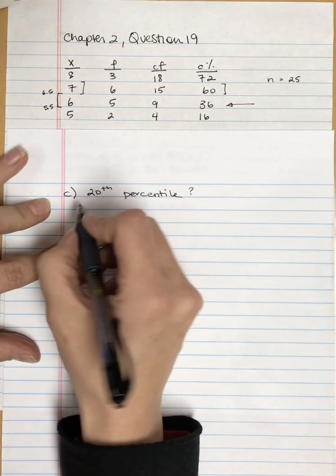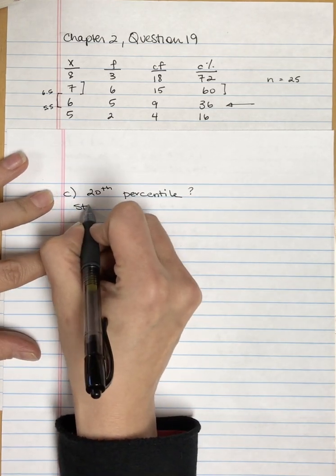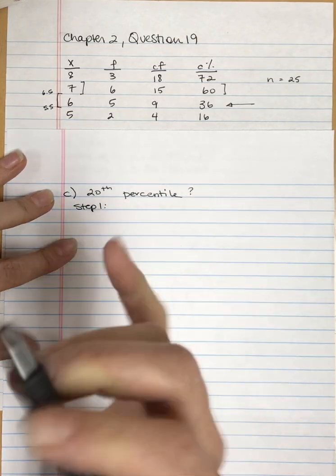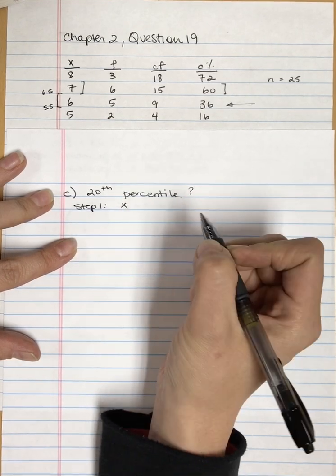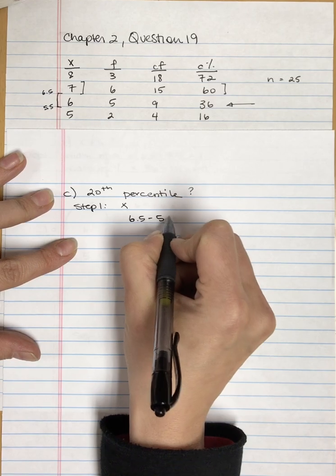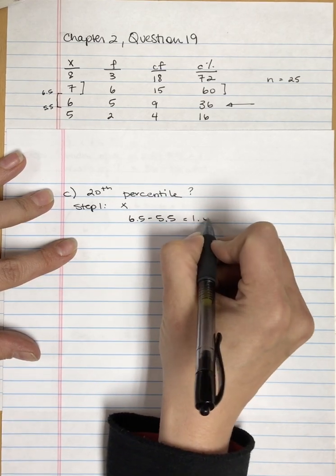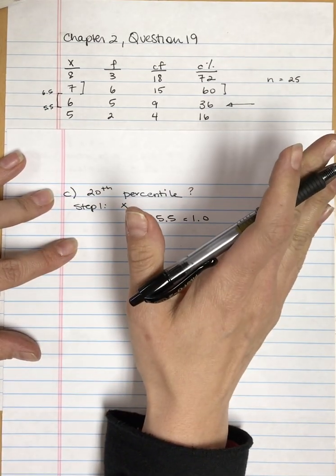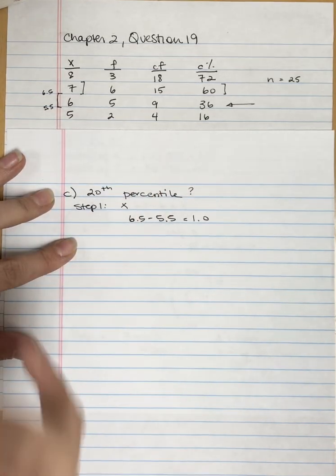Step one is to find the interval widths. The interval width on X is 6.5 minus 5.5, which is 1.0. This is the same as it has been for the previous ones because for a given question, the interval width of X does not change.